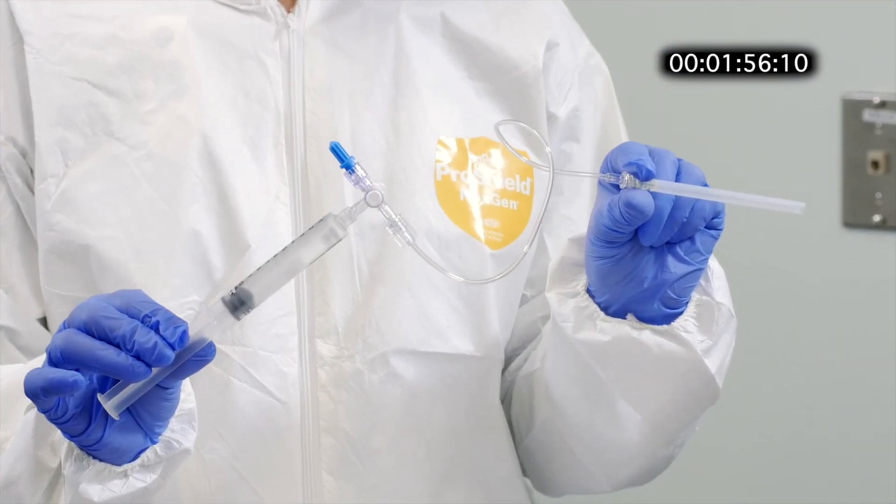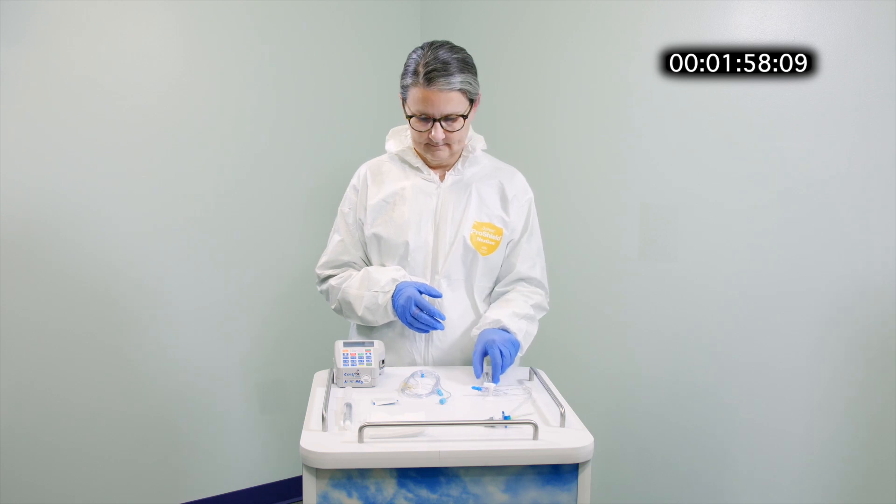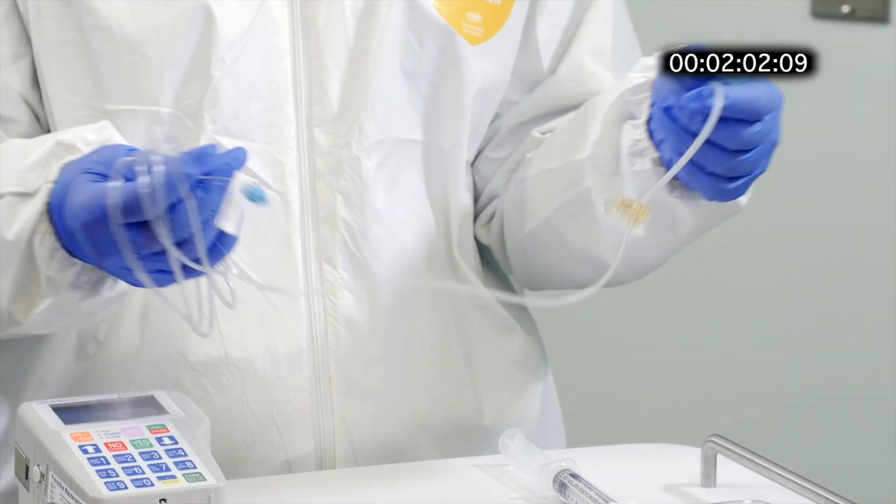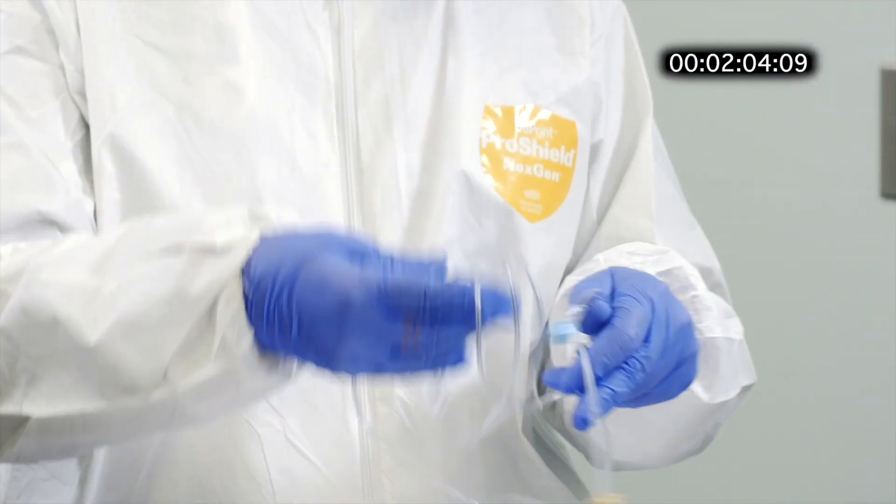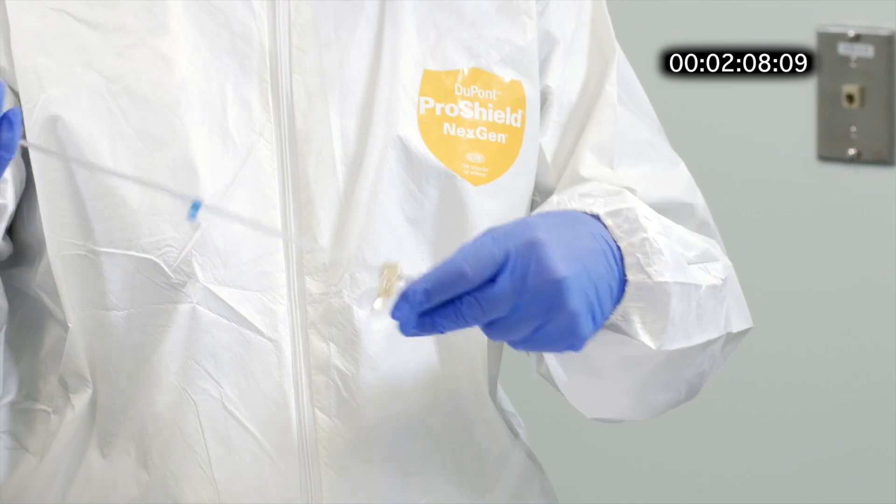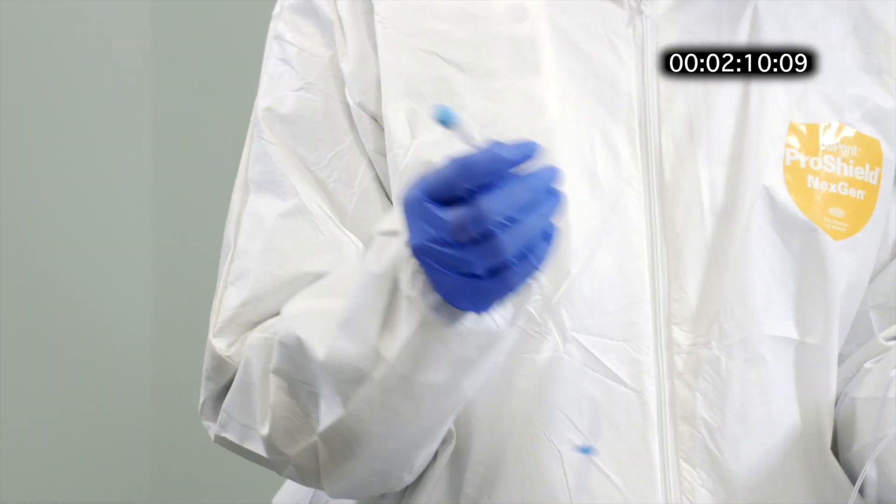So once the kit is partly assembled, the next step is to connect the 86-inch tubing from the Curlin pump to the 4-way stopcock.